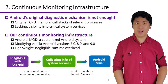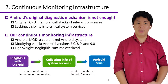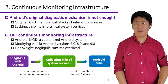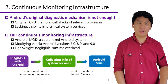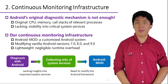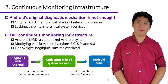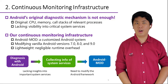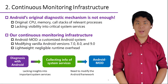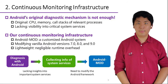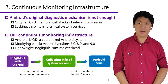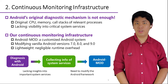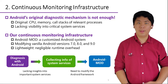To measure and analyze the problems at scale, a practical data collection infrastructure on Android devices is essential. Given that overhead should be as low as possible, the first thing that came to our mind is the original diagnostic mechanism in Android, which provides in-situ logging of CPU, memory states, and core stacks of timeout processes. However, this mechanism lacks critical visibility into system services that is important to problem analysis. Simply developing an app is not enough, even with root privilege. Therefore, we developed a customized Android system called Android Mode to collect additional information by applying lightweight modifications to vanilla Android versions 7.0, 8.0, and 9.0.